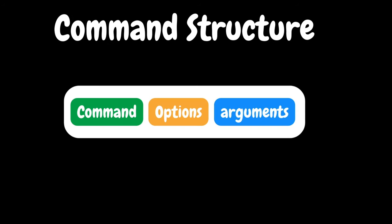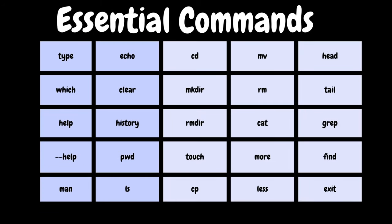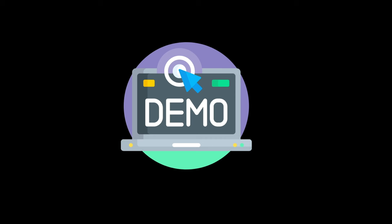Let's look at the command structure. The basic structure of a Linux command typically follows a consistent pattern with three components. First, the command — the name of the executable or built-in command we want to run. Then options — optional flags or switches that modify the behavior of the command, usually starting with a dash/hyphen or double dash. And finally arguments — the targets or inputs for the command, which can be files, directories, or other data the command acts upon. We will target essential commands that every Linux user should know and look at them practically with examples.